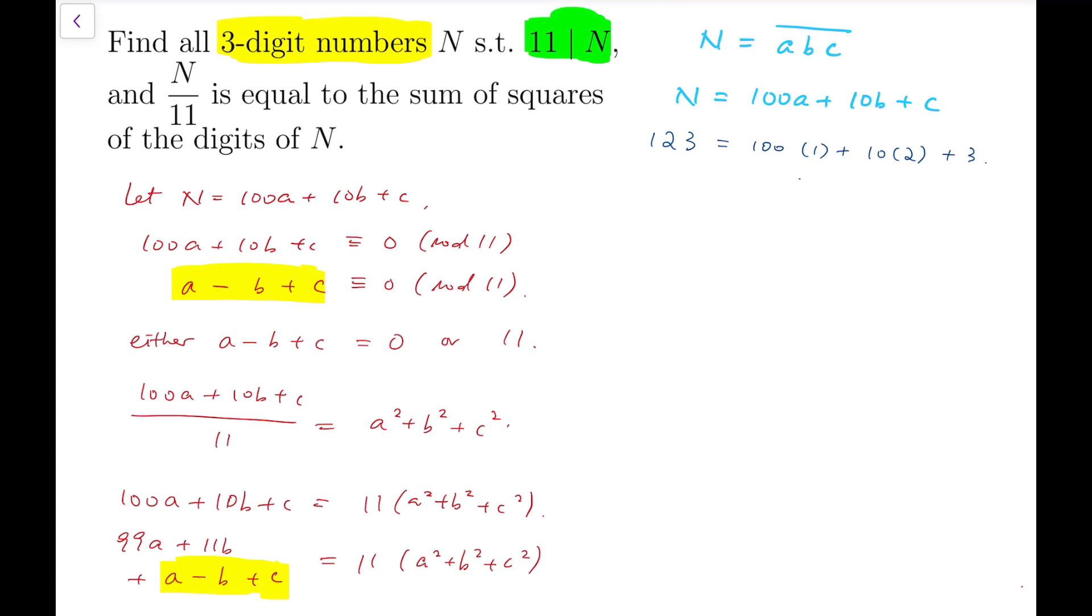So at this point, I'm going to divide this equation into two cases. The first case is that a minus b plus c is 0, and I can say b equals a plus c. Then we'll have 11 times 9a plus b equals 11 times a squared plus b squared plus c squared. Then we can cancel the 11s on both sides. At the same time, I'll rewrite b to be a plus c, and the right-hand side will become 2a squared plus 2ac plus 2c squared.